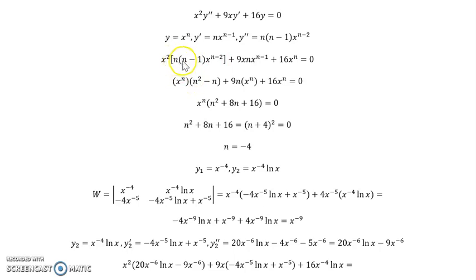We distribute our n to get n squared minus n. And then here x combines with n minus 1 to get x to the n. So we factor out our x to the n and we obtain our n squared. 9n minus n is 8n and then plus 16.